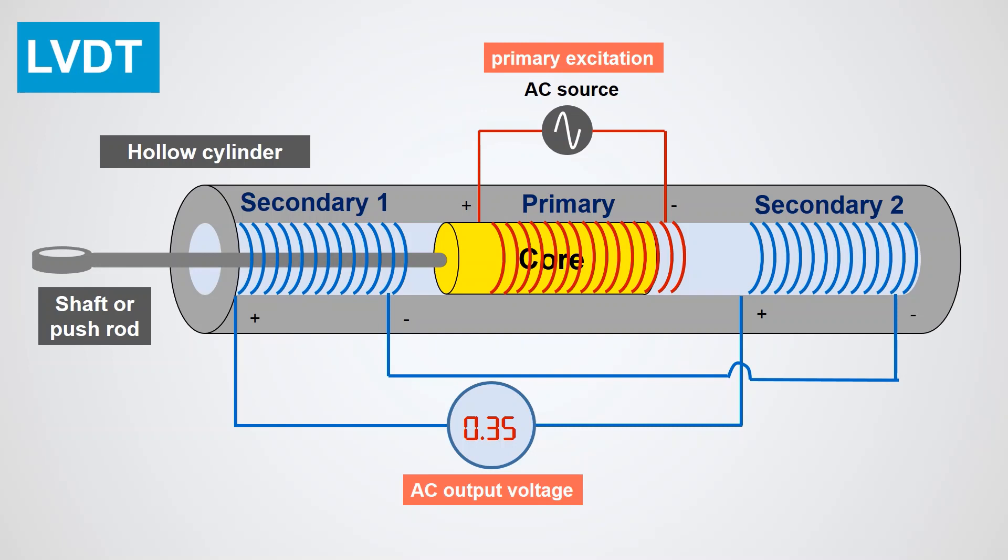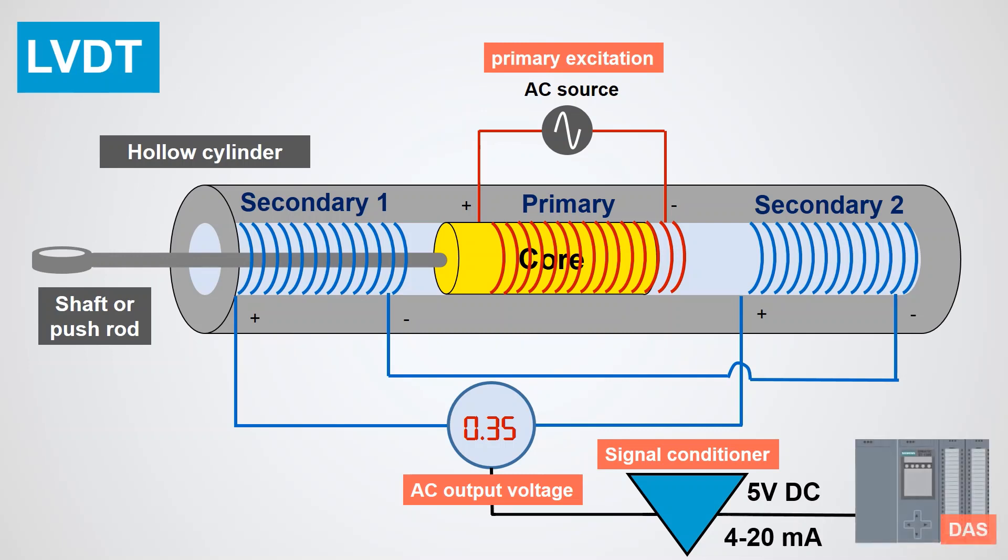A signal conditioning circuit that is housed inside the LVDT structure is required to convert the output to either 5 volts DC or 4 to 20 milliamps, whichever format is compatible with your data acquisition system.